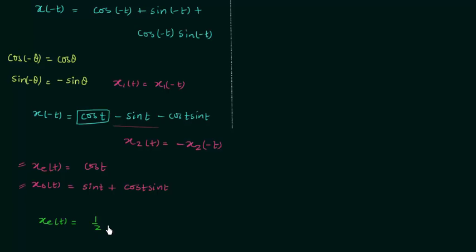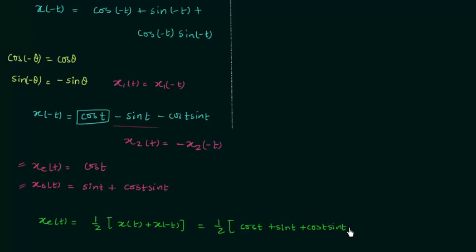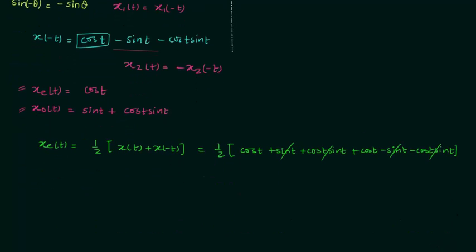The even component formula is xe(t) = ½[x(t) + x(-t)]. Substituting x(t) and x(-t), the +sin(t) and -sin(t) terms cancel out, and the +cos(t)sin(t) and -cos(t)sin(t) terms cancel out. We are left with twice cos(t) divided by 2, which equals cos(t). The even component from this formula matches what we obtained by the comparison method.